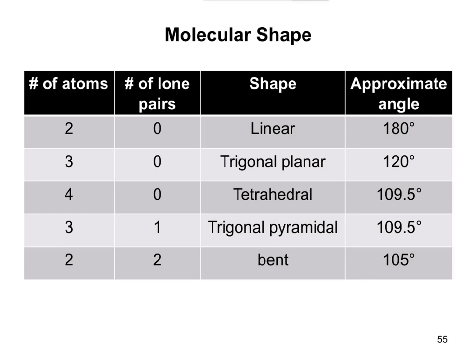You should be able to recognize, for instance, carbons are commonly going to be tetrahedral because they have four bonds and no lone pairs. Nitrogens are commonly going to be trigonal pyramidal because nitrogens typically have three bonds and one lone pair.